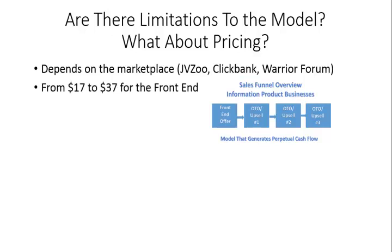In general, you want to keep your front-end offer right around $17 to $37. You don't want to go too low — if you offer a product at $9, you're not giving your affiliates the opportunity to profit significantly. Typically an affiliate likes to see the opportunity to earn on a particular sale. Keeping the front-end between $17 and $37 gives affiliates and you both the opportunity to earn on that sale.